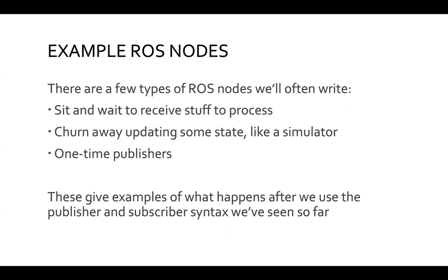There are a few common node execution patterns. First: subscribe and spin — set up subscribers and then do nothing, just wait. Second: workaholic loop — constantly update some state and publish results. Third: one-time publish — publish once and exit. Let's look at examples of what happens after that setup syntax.